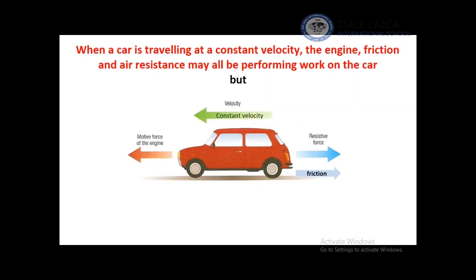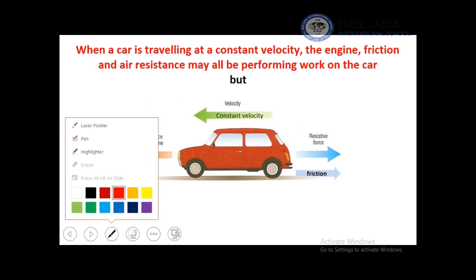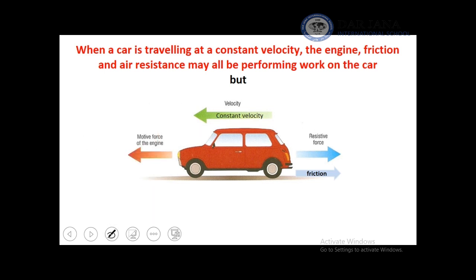Now, in case a car is traveling at a constant velocity, the engine, friction, and air resistance may all be performing work on the car. In this case, we say that the total work on this car is zero because it has constant velocity.